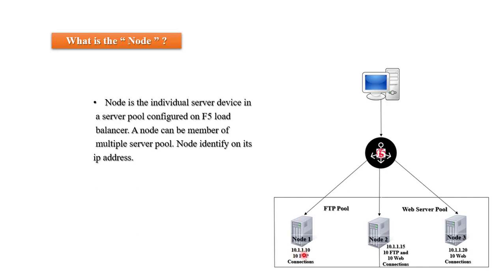A node is identified by its IP address. For example: node 1 has IP address 10.1.1.10, node 2 has IP address 10.1.1.15, and node 3 has IP address 10.1.1.20.